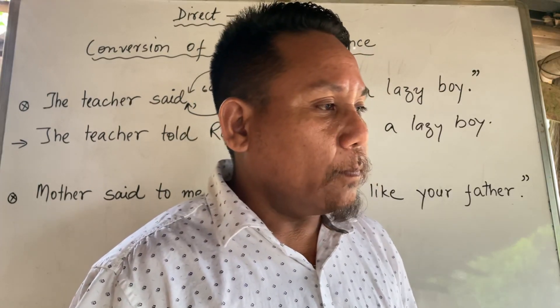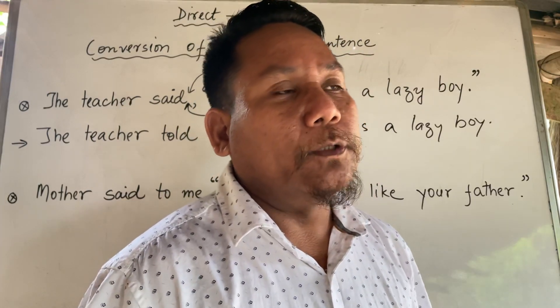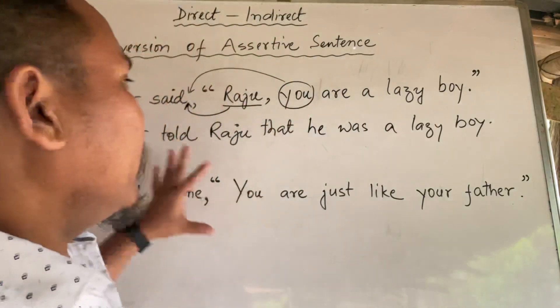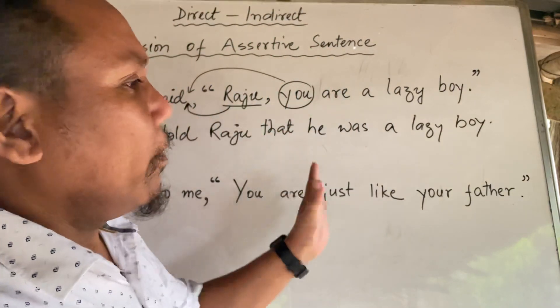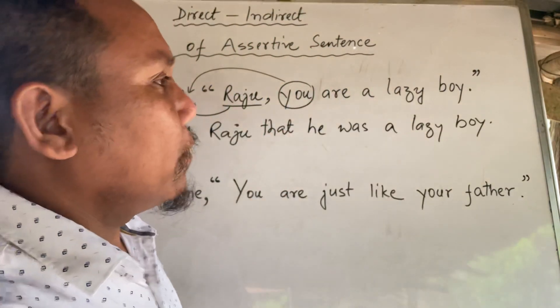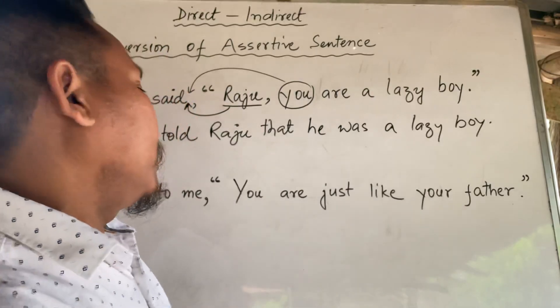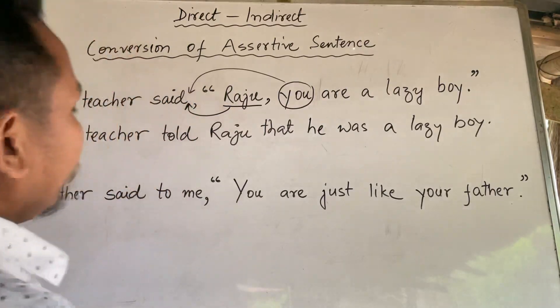Interrogative, Imperative, Optative or Exclamation — we get to know how to correct them. The subject, verb, object is the word that they use correctly. Sometimes they get to know how to correct them.